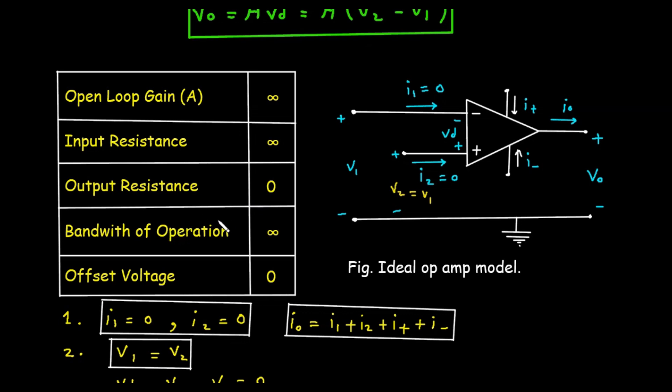Next is bandwidth of operation. It should be infinite. An ideal Op Amp can amplify any signal from DC to any infinitely high frequency with the same infinite gain. Real Op Amps have a limited bandwidth and their gain drops as frequency increases. Then, next is offset voltage. Ideally the offset voltage should be zero. An ideal Op Amp produces exactly zero output voltage when the input voltage difference VD is zero. Real world Op Amps have a small input offset voltage that can cause a non-zero output in this condition.